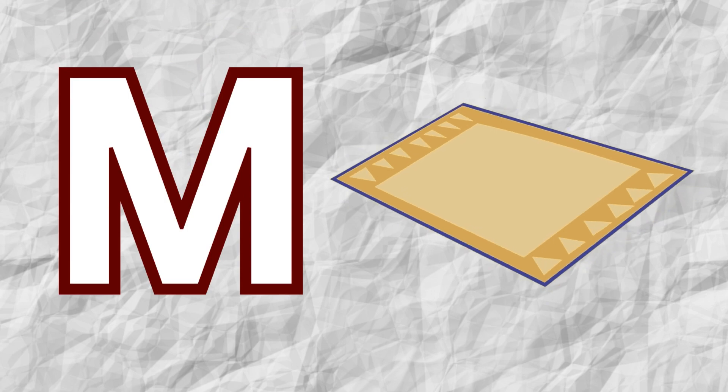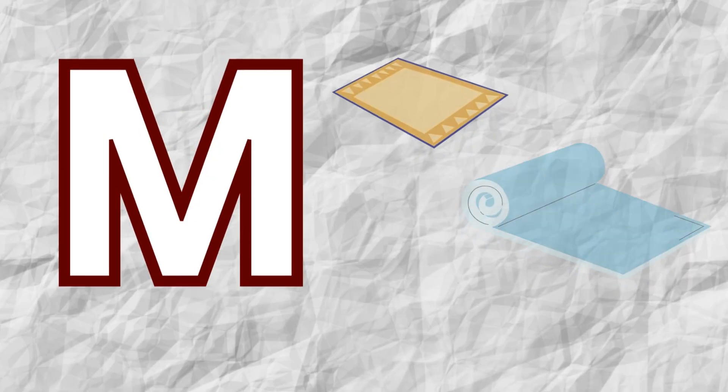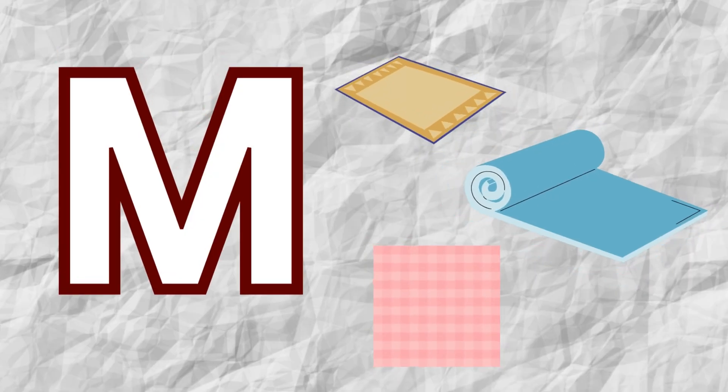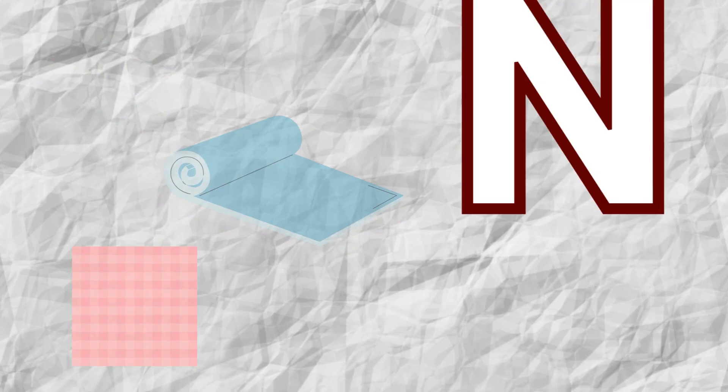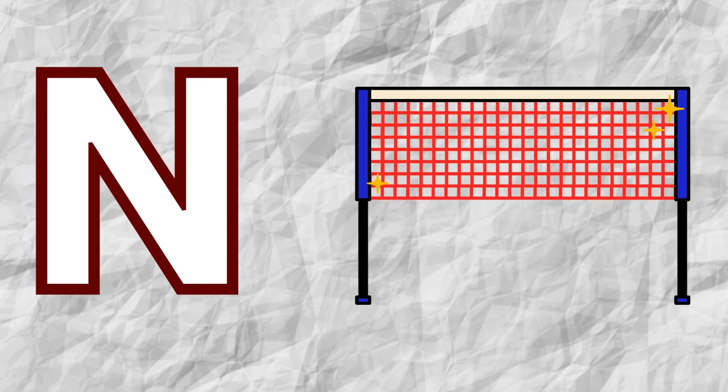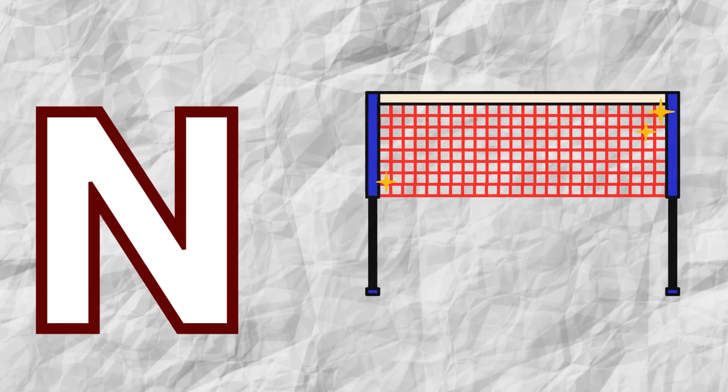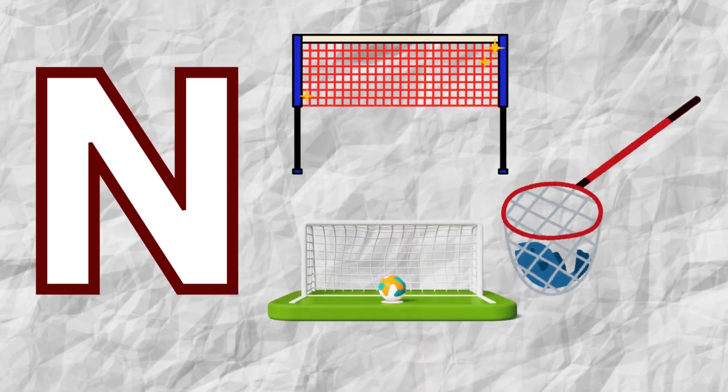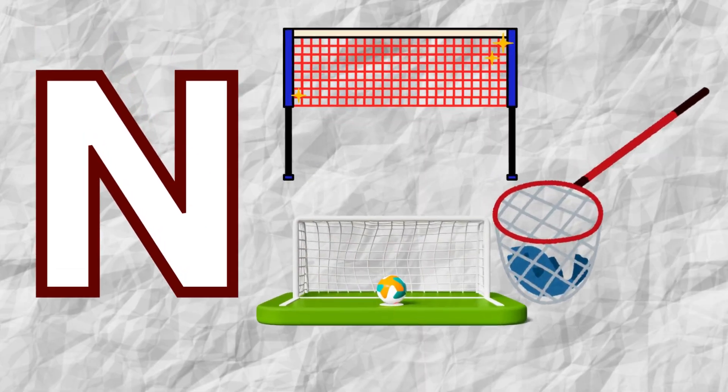M is for mat, m-m-mat. N is for net, n-n-net.